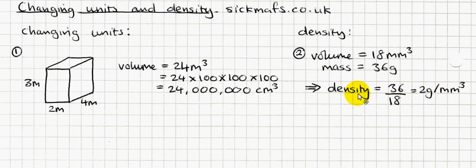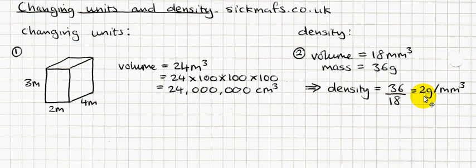One millimeter cubed weighs 2 grams. The way you write density is: 2 grams per millimeter cubed — for every millimeter cubed. You could swap things around. Density is basically the mass divided by the volume. If one block is 2 grams and I wanted 100 millimeters cubed of this stuff, I'd times it by 100, so 100 millimeters cubed would just be 200 grams. Just use your common sense for this topic — it's way too easy to just memorize formulas.